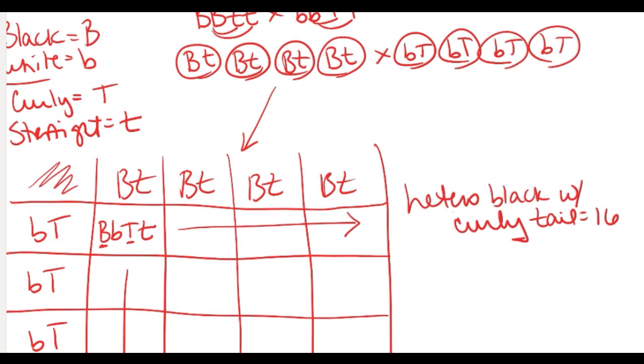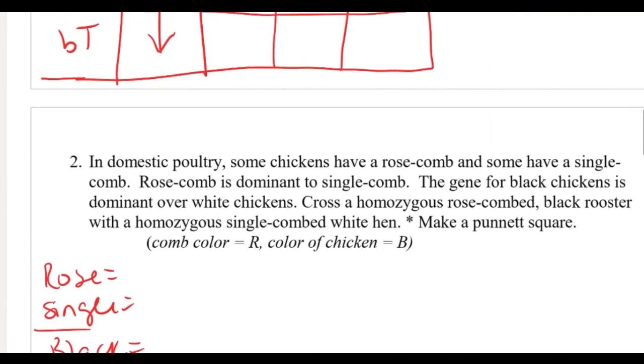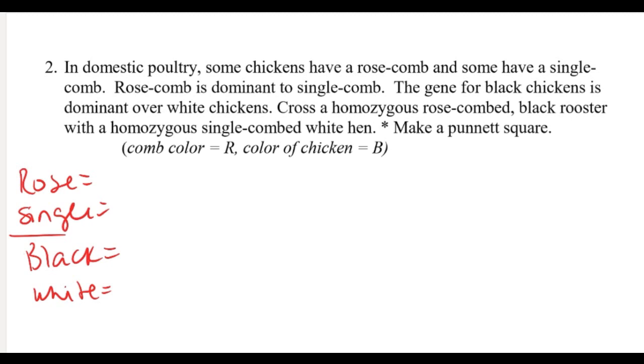Let's do number two. So now I've got chickens: rose comb, single comb. Rose is dominant, so I'm going to do big R little r. It looks like I've got color, so black is dominant over white, and I'm going to use B's for that. I'm going to cross a homozygous rose black rooster - the male - so that would be homozygous rose, two capital R's, and a black rooster. Remember, this word is going to apply for both terms.